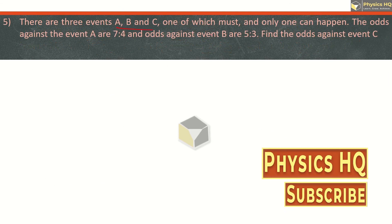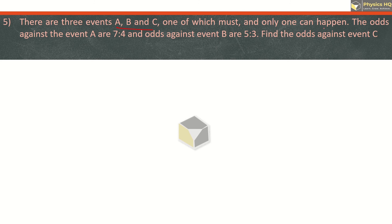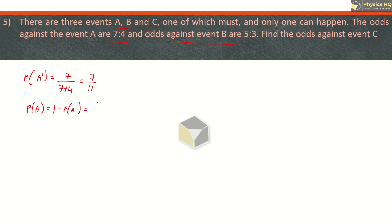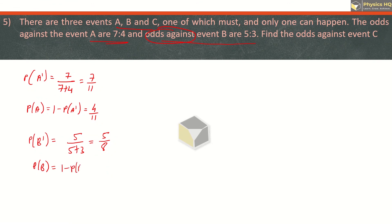There are three events A, B and C, one of which must and only one can happen. The odds against event A are 7 is to 4, and odds against event B are 5 is to 3. Find the odds against event C. P(A dash) is 7 upon 7 plus 4, which is 7 by 11. So P(A) is 1 minus 7 by 11, which is 4 by 11. For B, P(B dash) is 5 upon 5 plus 3, which is 5 by 8. So P(B) is 3 by 8. We have to find P(C).